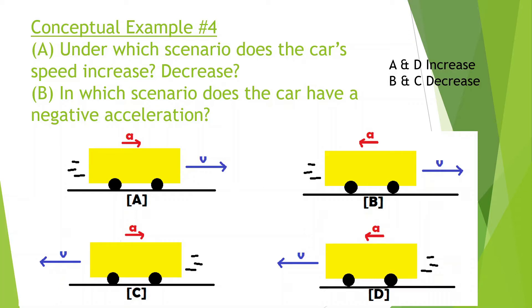In which scenario does the car have a negative acceleration? A lot of people think that if it's slowing down, that must mean negative acceleration — however, that's not always true. It's always going to be true that the acceleration is negative when it is pointed down or pointed to the left. The direction is what matters. Left and down is what's going to be counted as negative. Just know that left and down is negative.